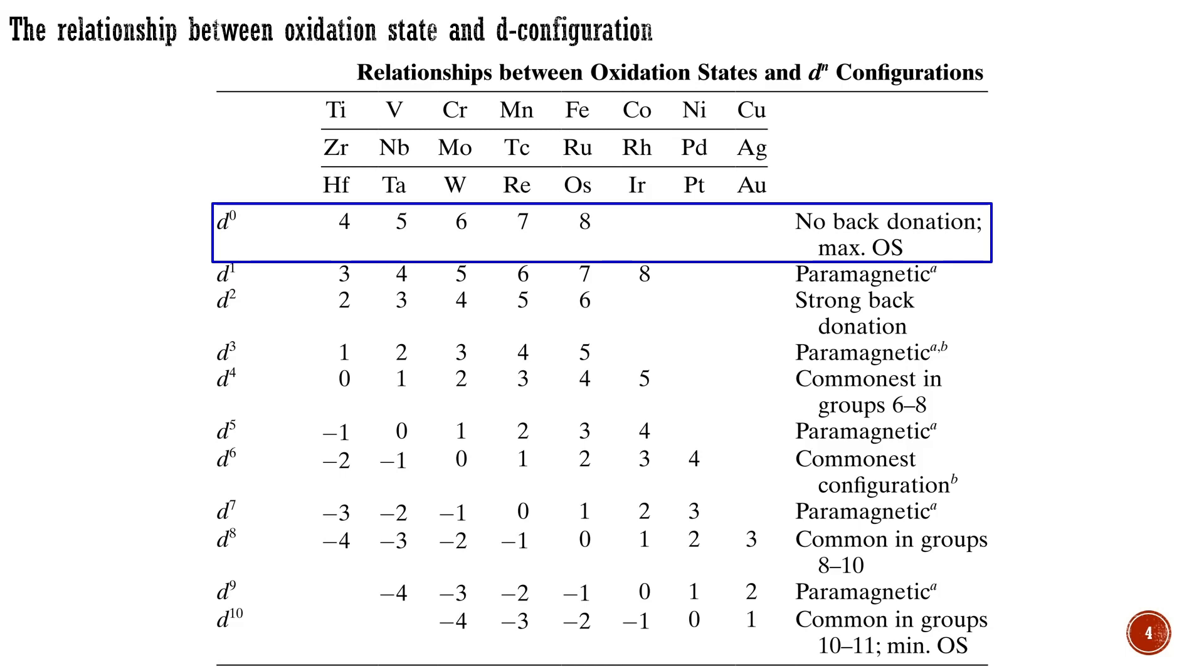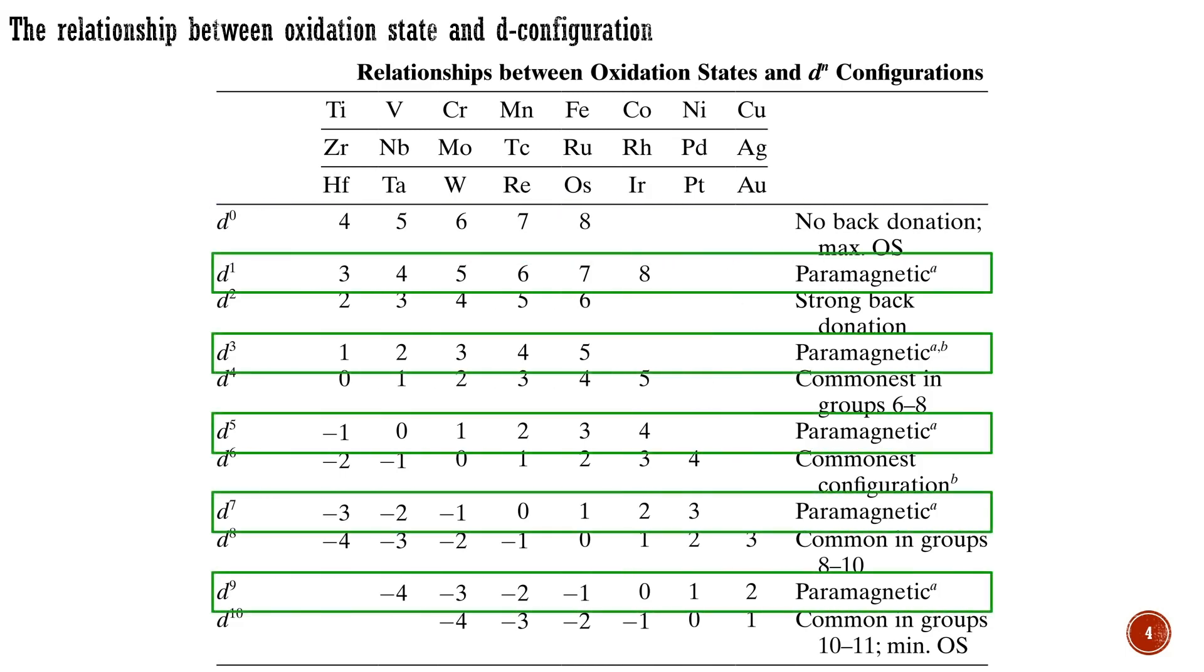Additionally, the increased partial positive charge on the metal in a high oxidation state complex strongly stabilizes the d levels so that any electrons they contain become less available. Even d-configurations are much more common than odd ones, particularly for the second and third row.